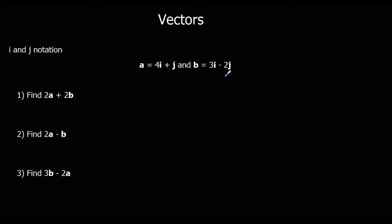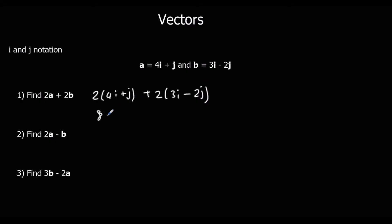Okay, so this time we've got a as along 4 up 1, and b along 3 down 2. So 2a plus 2b — 2 lots of a plus 2 lots of b — gives us 8i plus 2j, plus 6i minus 4j, which is 14i minus 2j.